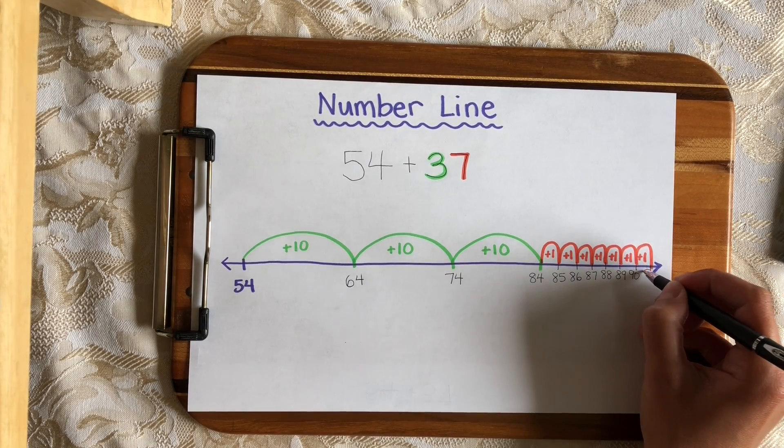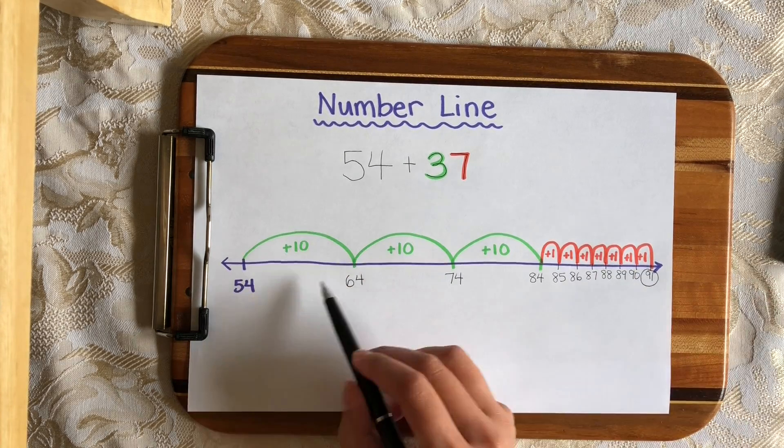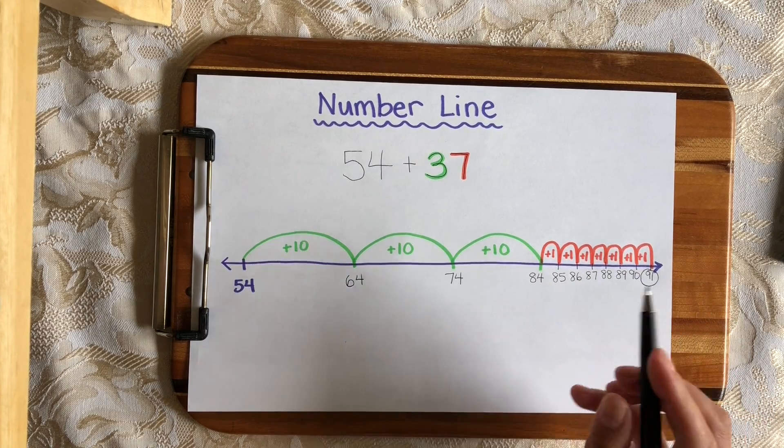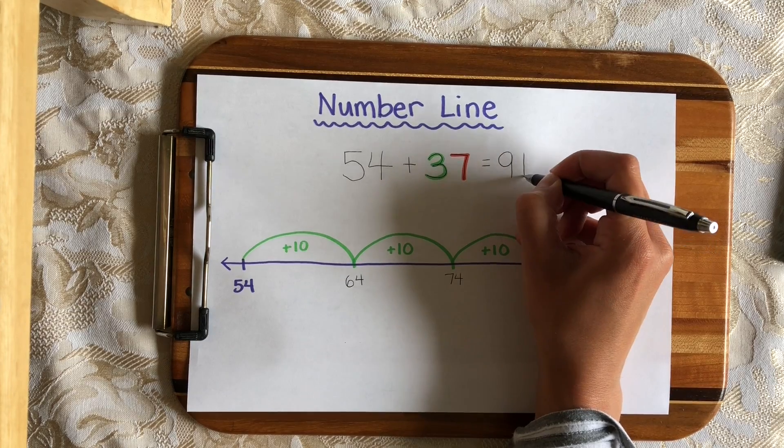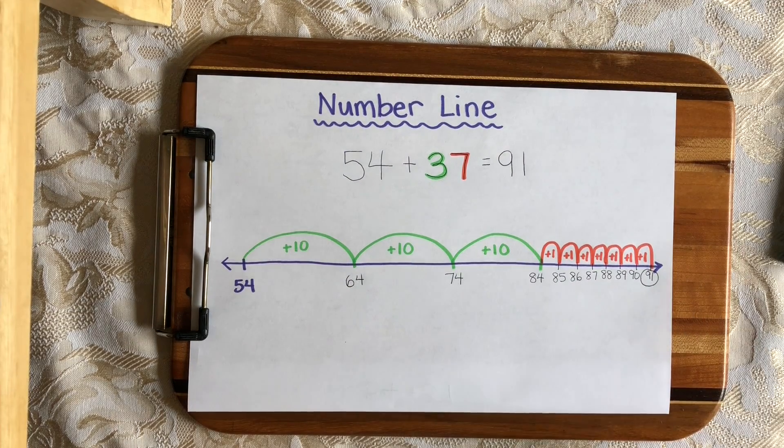So since I landed on 91 after making 3 hops of 10 and 7 hops of 1, my sum is 91, which means the sum of 54 plus 37 is 91.